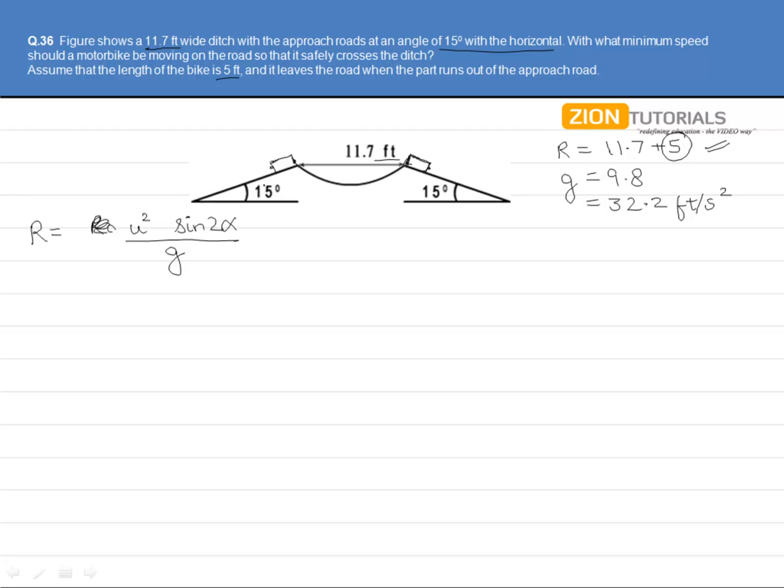Where alpha is the angle of projection. So u square here comes out to be Rg over sine 2 alpha.